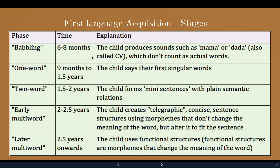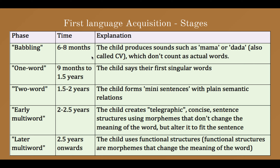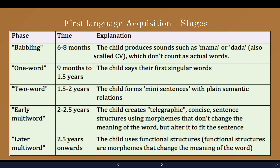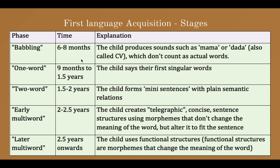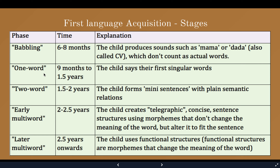During the babbling phase, the sounds produced don't count as actual words. The next stage is the one-word stage, which is from 9 months to 1.5 years. In this stage the child produces one word, or one original word, and they don't produce many words yet.